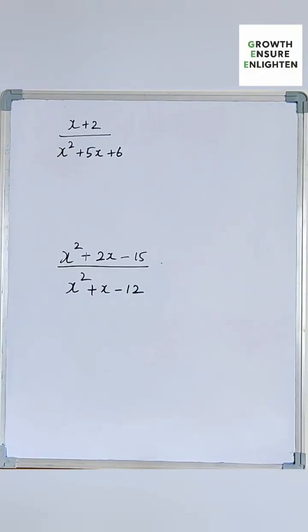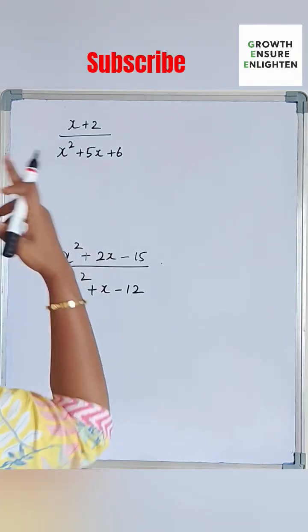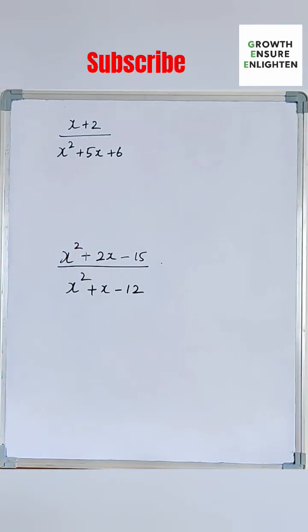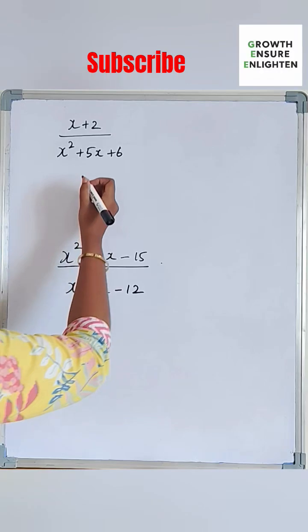Polynomials into the lowest form. So step number one is we need to factorize these polynomials in order to simplify the most. About the factorization, I have already uploaded the detailed video. Please check the previous videos and I have attached the link in the comment section. So let's check this.